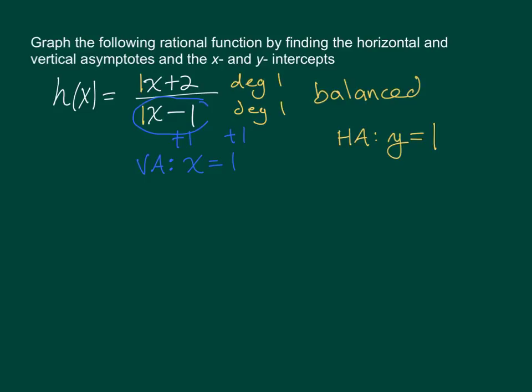In order to find the x-intercept, we set the numerator equal to 0 and solve for x. So we have x plus 2 equals 0, and when you solve this for x you get x equals negative 2. Since we are finding an x-intercept, this coordinate pair will be negative 2, 0.